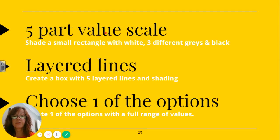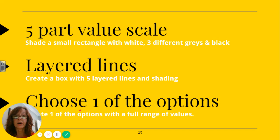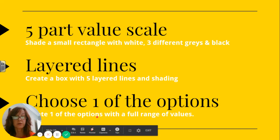Okay, so five-part value scale, just start with that so that you have a range of values visually to be using. Then create your box with the layered lines. And then you're going to choose one of the options to do. You do not have to do all five. If you want to try them out, great, and show me what you did. But you're going to choose one of those.